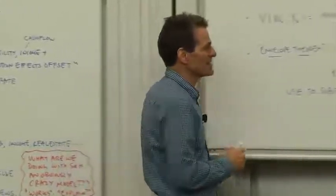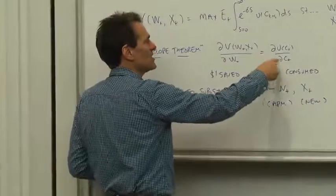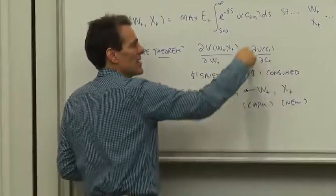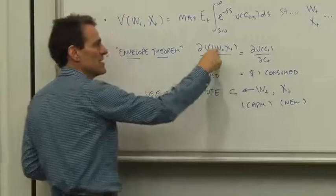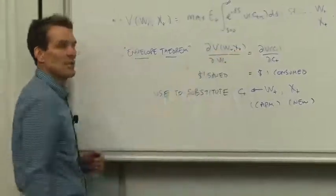Now that's very useful for us. Look right there. It's going to be the key that lets us substitute out, get rid of marginal utilities of consumption in terms of W and X, which is our goal.